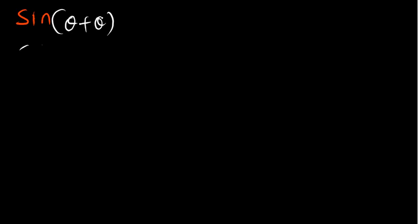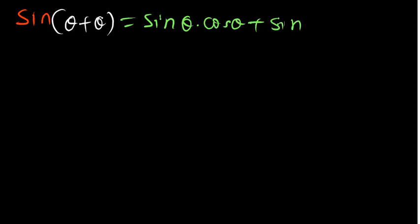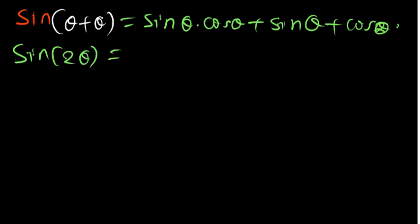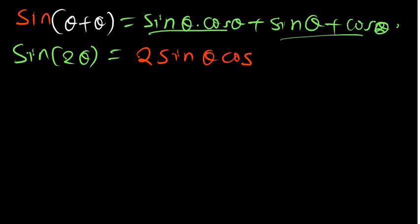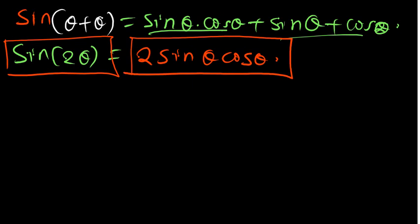I want to show you the important identities under sum and difference formulas. We know this is going to be sine theta times cos theta plus sine theta times cos theta. Since theta plus theta gives 2 theta, these two terms are the same, so I can add them to get 2 sine theta cos theta. So wherever you see sine 2 theta, you can replace it with this identity.